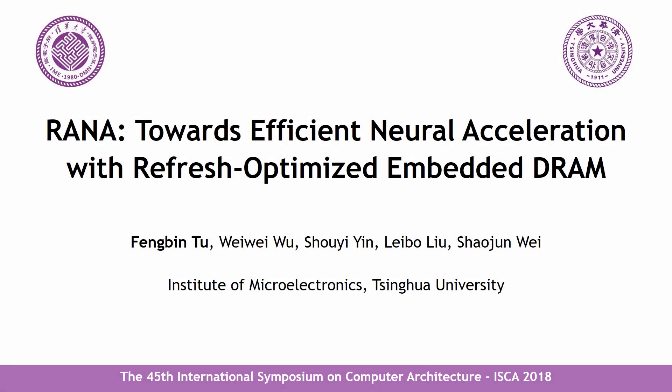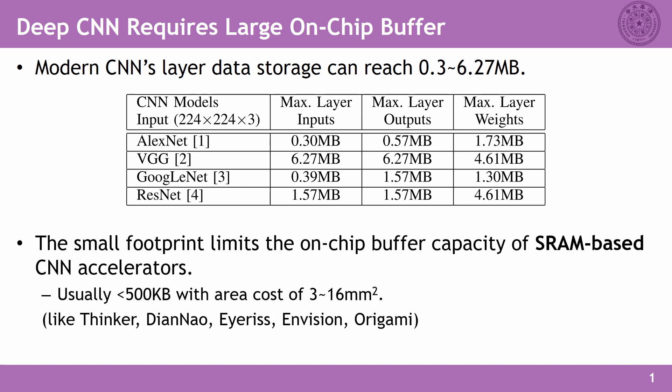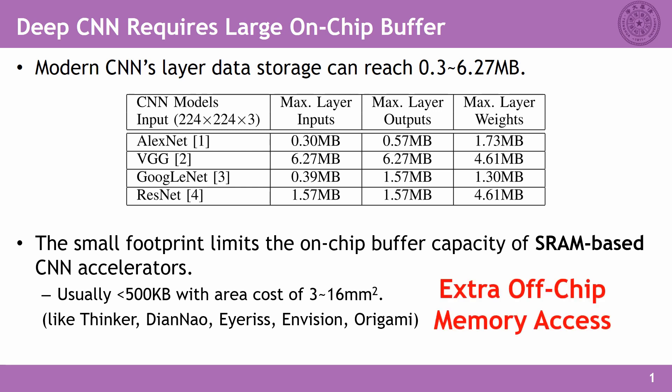In this work, we propose a framework to enable energy-efficient neural network acceleration with refresh-optimized ED-RAM. To achieve high accuracy, modern CNNs usually have very large layer sizes. However, the small footprint limits the on-chip buffer size of SRAM-based CNN accelerators, so it is inevitable to produce extra off-chip memory access when they run modern CNNs.